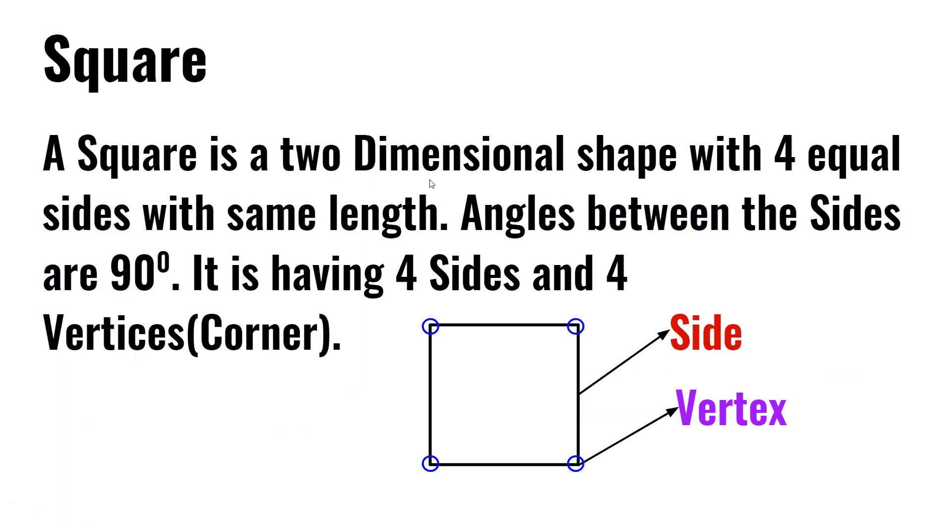A square is a two-dimensional shape with four equal sides and same length. Angles between the sides are 90 degrees. It has four sides and four vertices. Vertices are also corners.